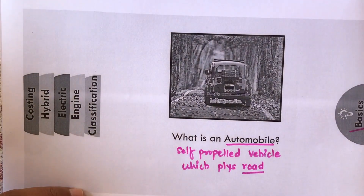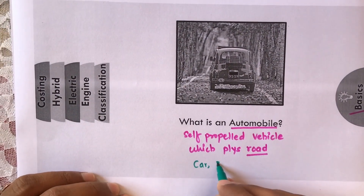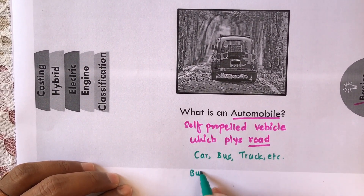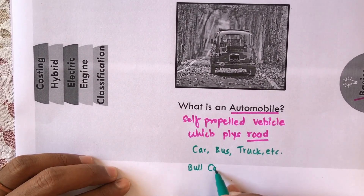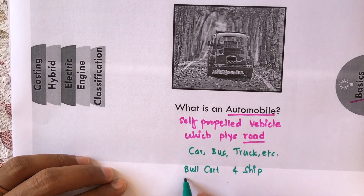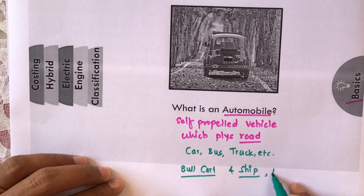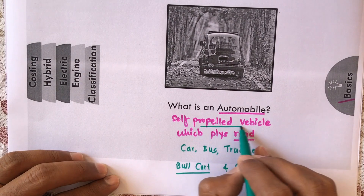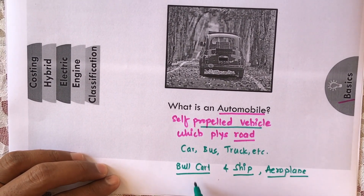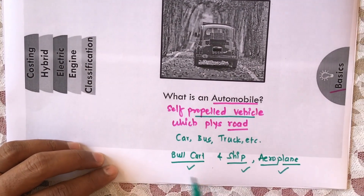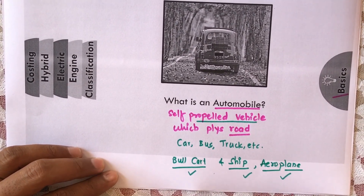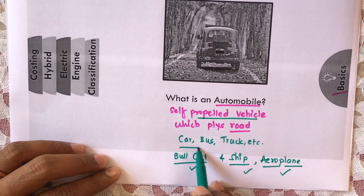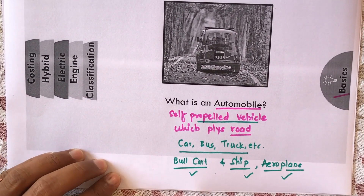Different examples of automobiles include cars, buses, trucks, and so on. Now, can we call a bullock cart, a ship, or an aeroplane an automobile? We cannot, because although these may be self-propelled, they do not run on the road. That is why these are not called automobiles. Automobiles are vehicles which are self-propelled and which run on the road — cars, buses, trucks, and so on.